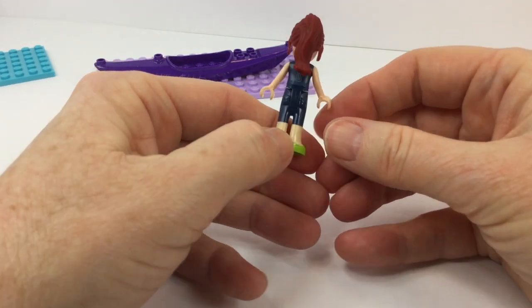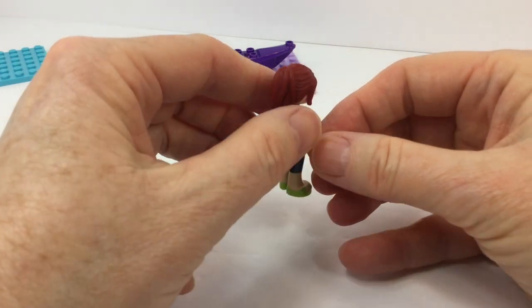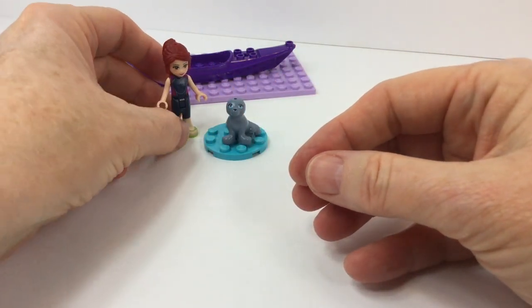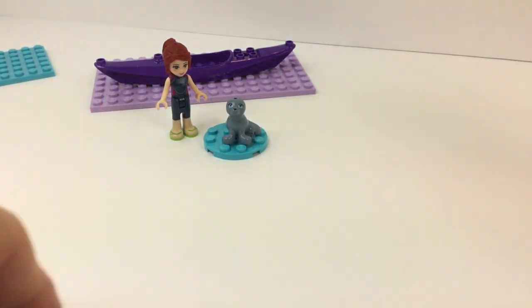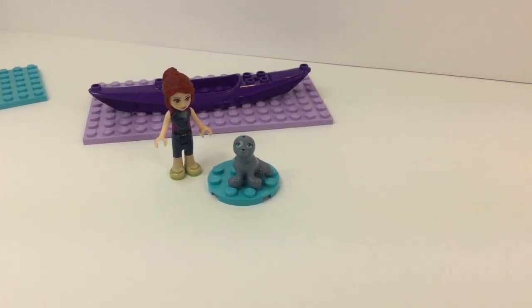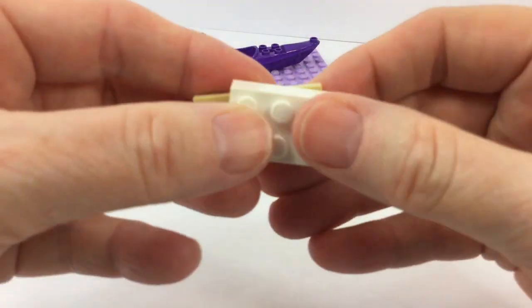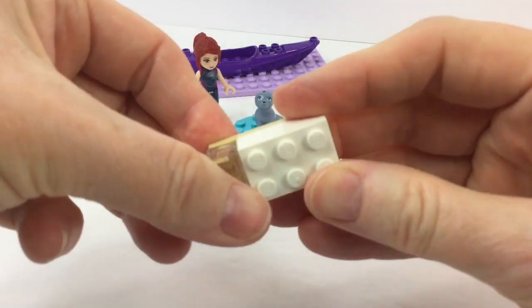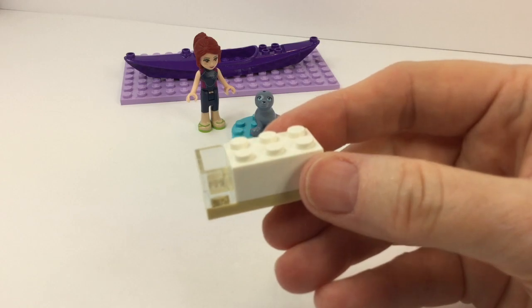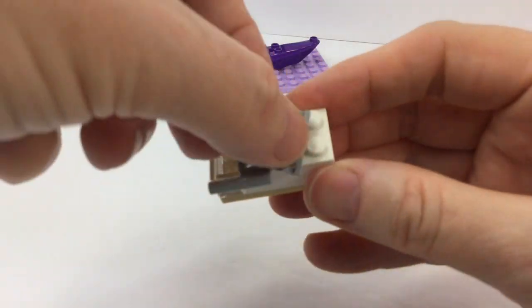So why don't we get started and see if we can start building some things. We're gonna leave Sammy the seal on his little piece of water for now, we're gonna build something for him in a minute. But seals love water so we're gonna leave him right there and let's get started building.